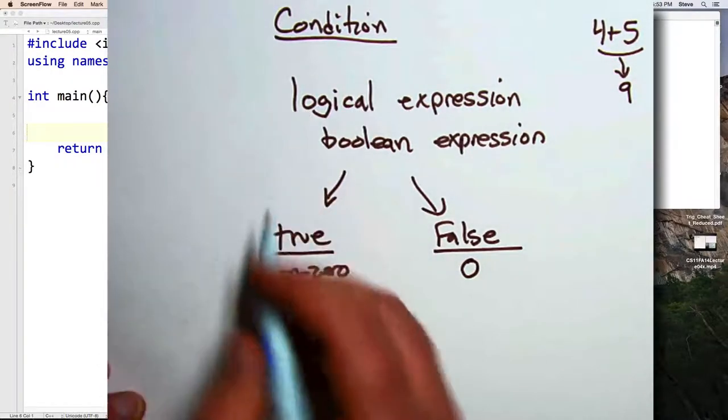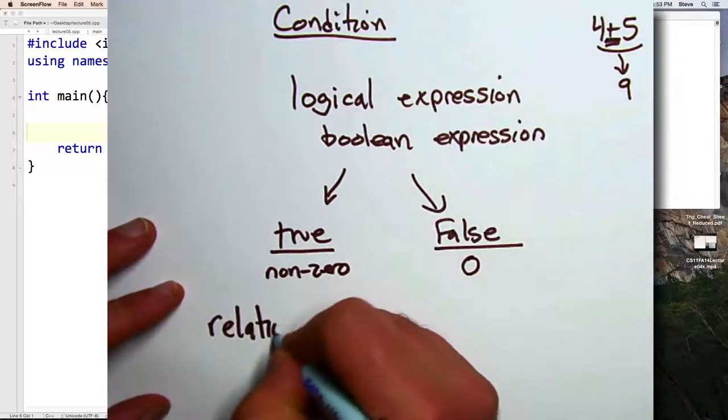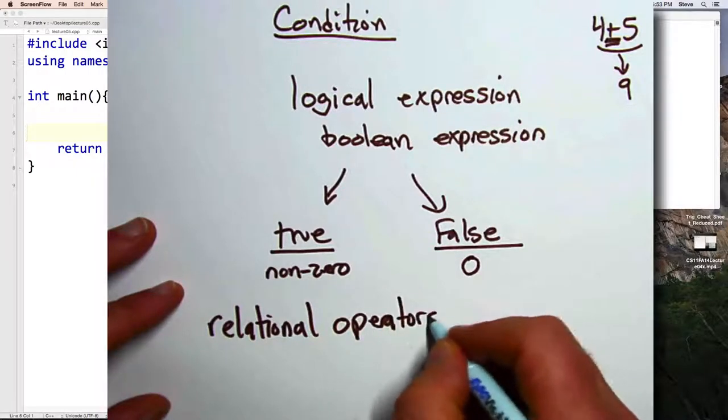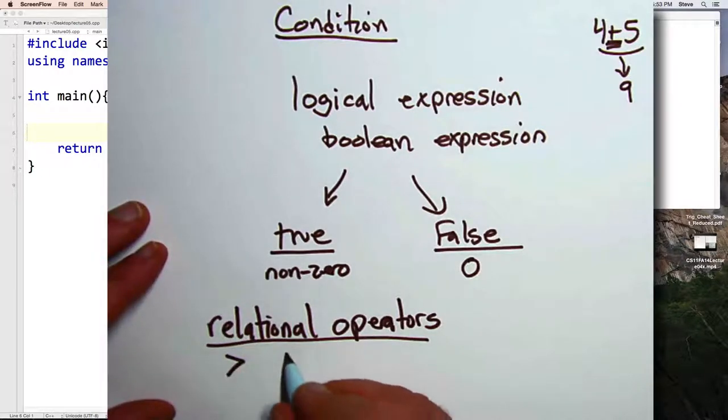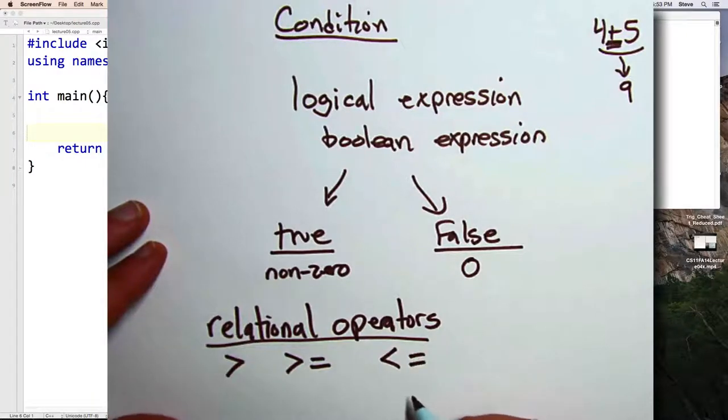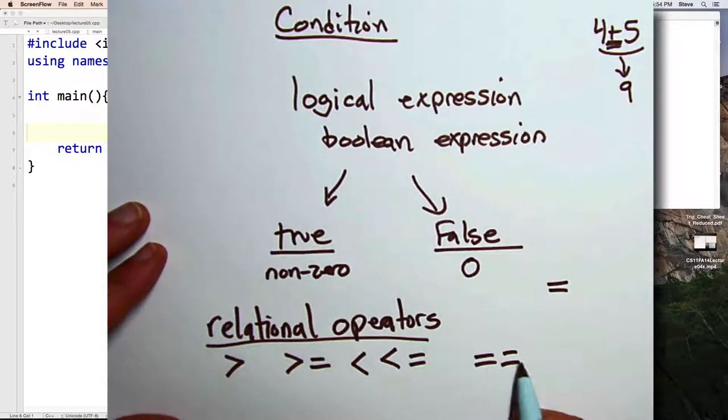In order to construct a logical expression, we need a different type of operator than we've used before. We need what are called relational operators. Relational operators allow us to relate one value to another. Relational operators in C++ include greater than, greater than or equal, less than, less than or equal. The test for equality is two equal signs written together. Remember that we used one equal sign on its own for assignment. So two written together is the test to see if two things are already equal. And exclamation point equals for not equals. Visually, that's supposed to remind us of the mathematical symbol for two things not being equal. But in C++, we don't use that symbol. We use these two.